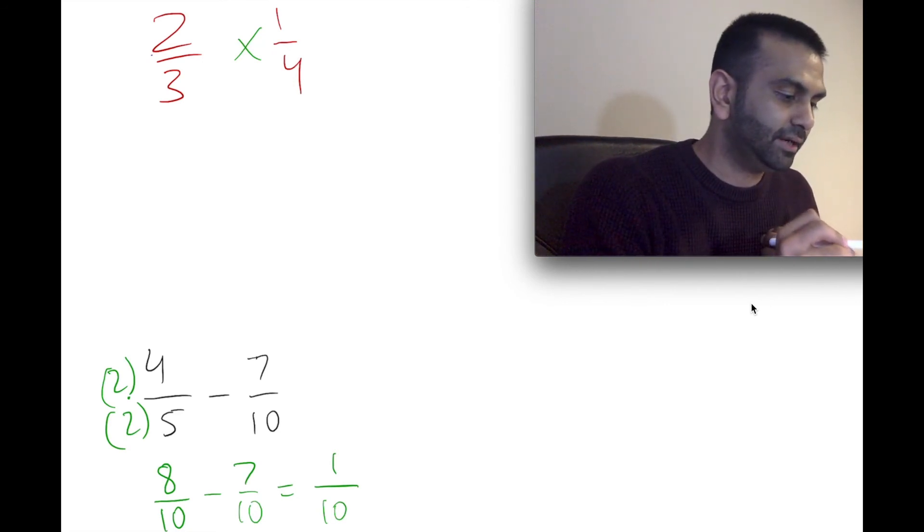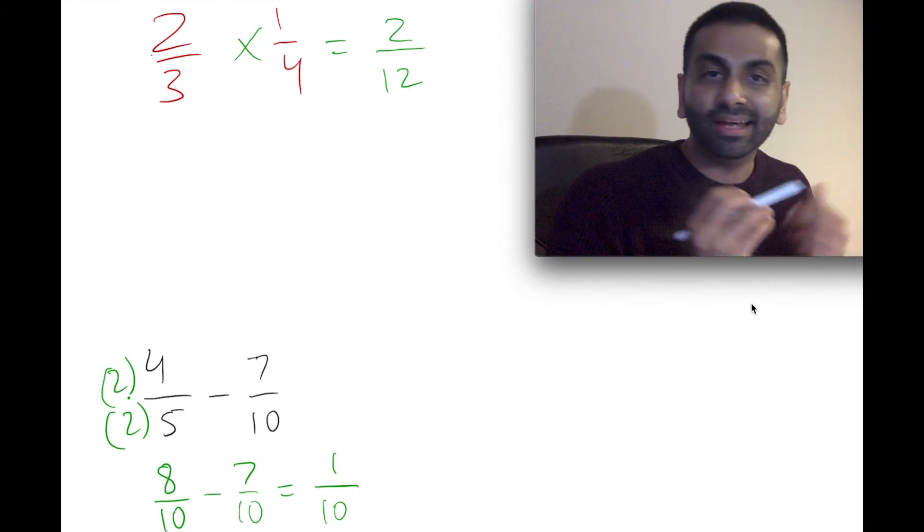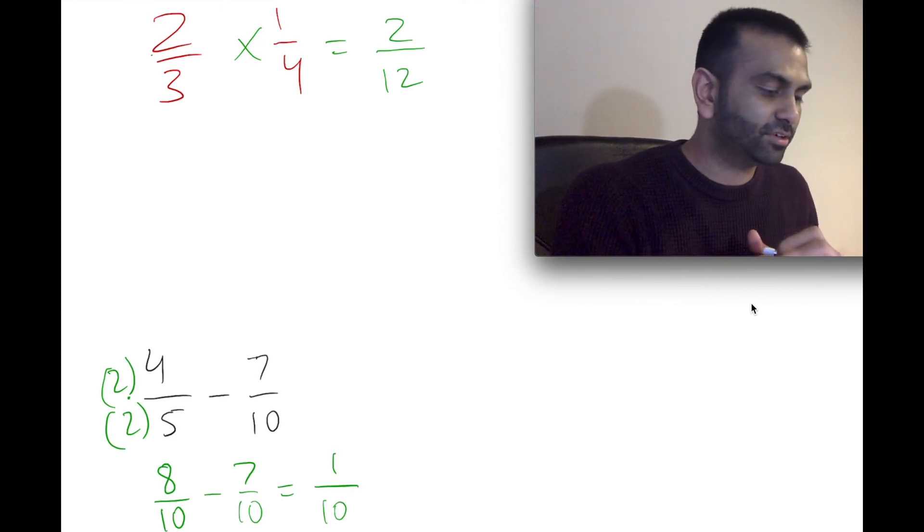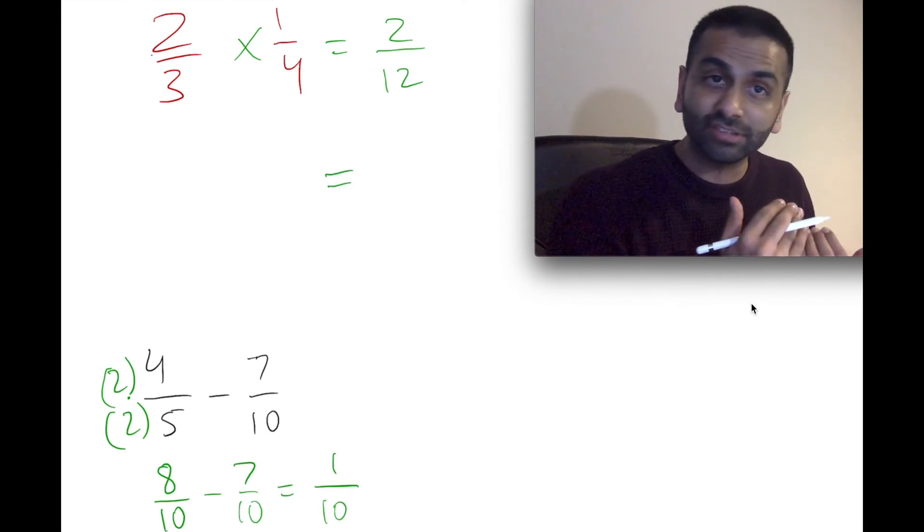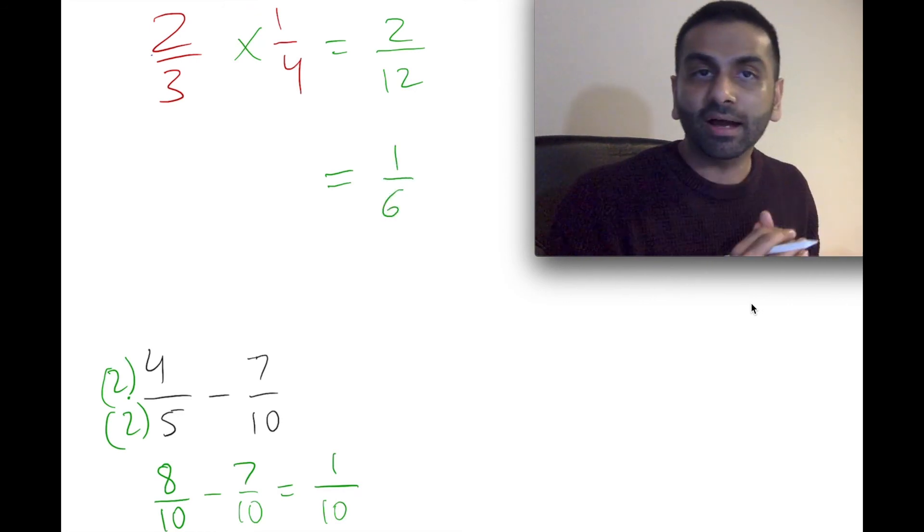So here, you would just do 2 times 1 is 2 on the numerator, and 3 times 4 is 12 on the denominator, and that's it. That's the answer. If you wanted to, you could reduce that fraction. You could simplify that, and that would be 1/6. But, yeah, that's how you multiply fractions.